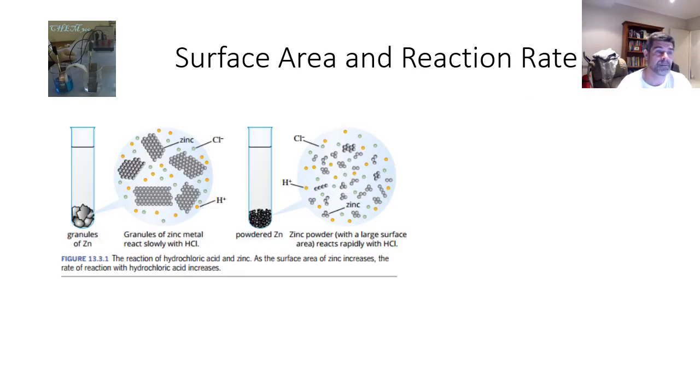This continues our little mini-series in looking at the factors that affect the rate of a chemical reaction. So the second one we're going to be looking at is the Effective Surface Area.